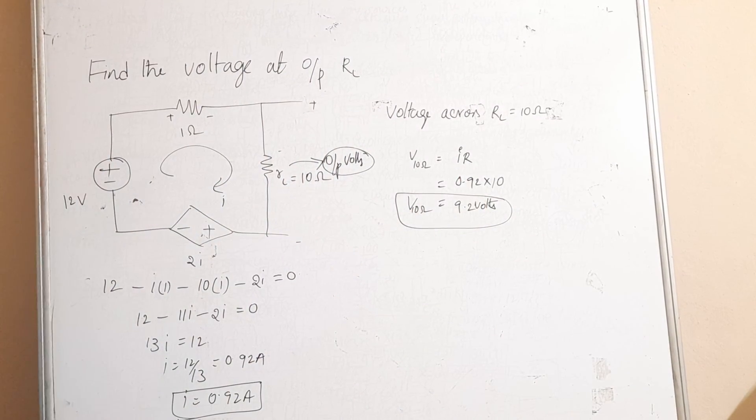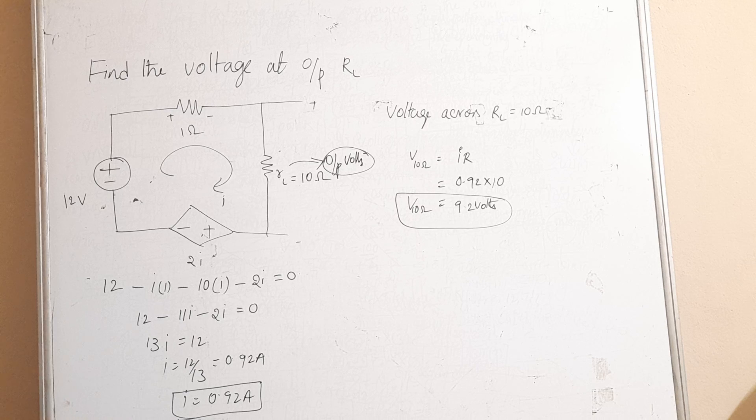Voltage across the 10 ohm resistance, so this is the answer for the corresponding circuit based on the normal KVL method. Thank you for watching GMK tutorial.